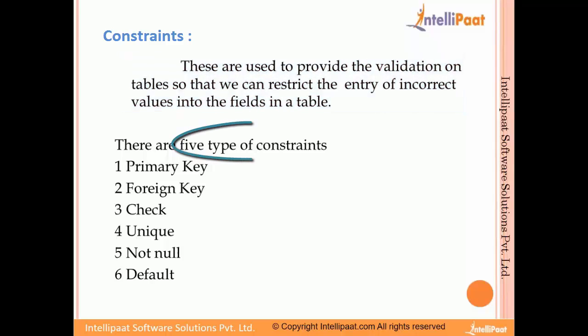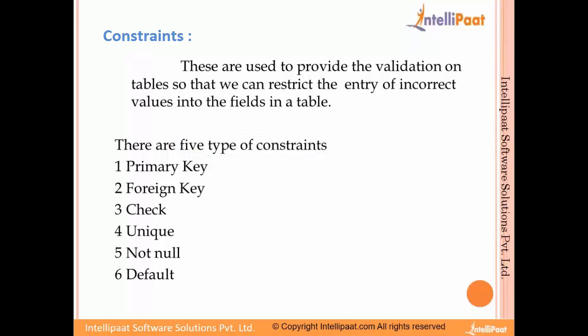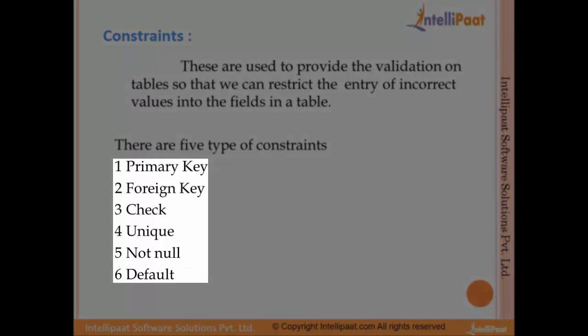There are five types of constraints. Basically, if we go by theory there are only five types, but the sixth one which I have listed here is default, which we use on a large scale. The types of constraints are: primary key, foreign key, check, unique, not null, and default.